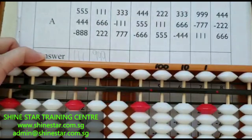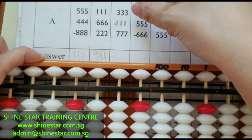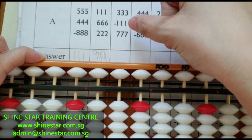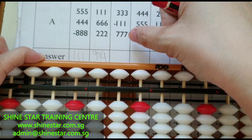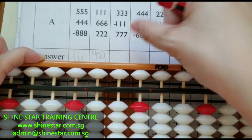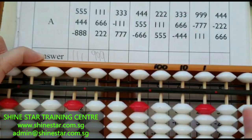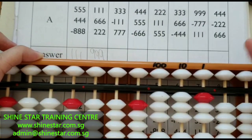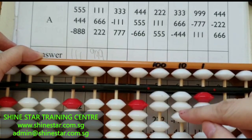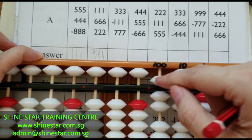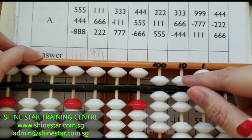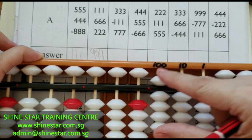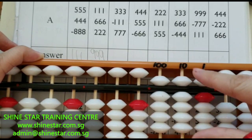Next: 333 minus 111 plus 777. The answer is 999.